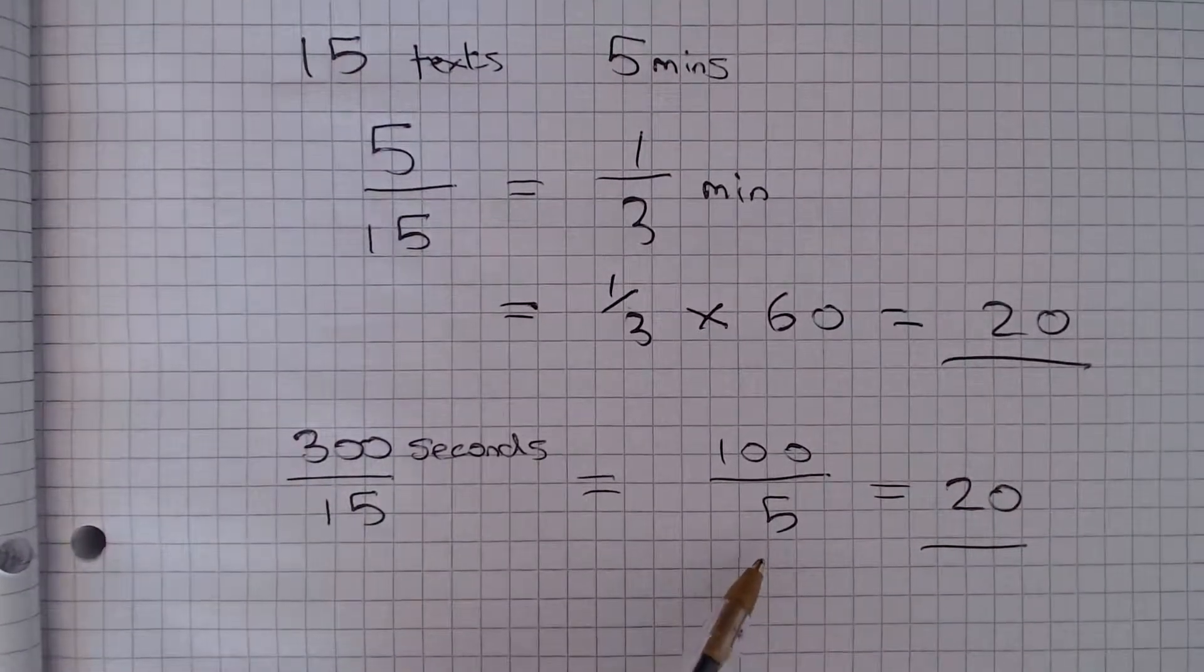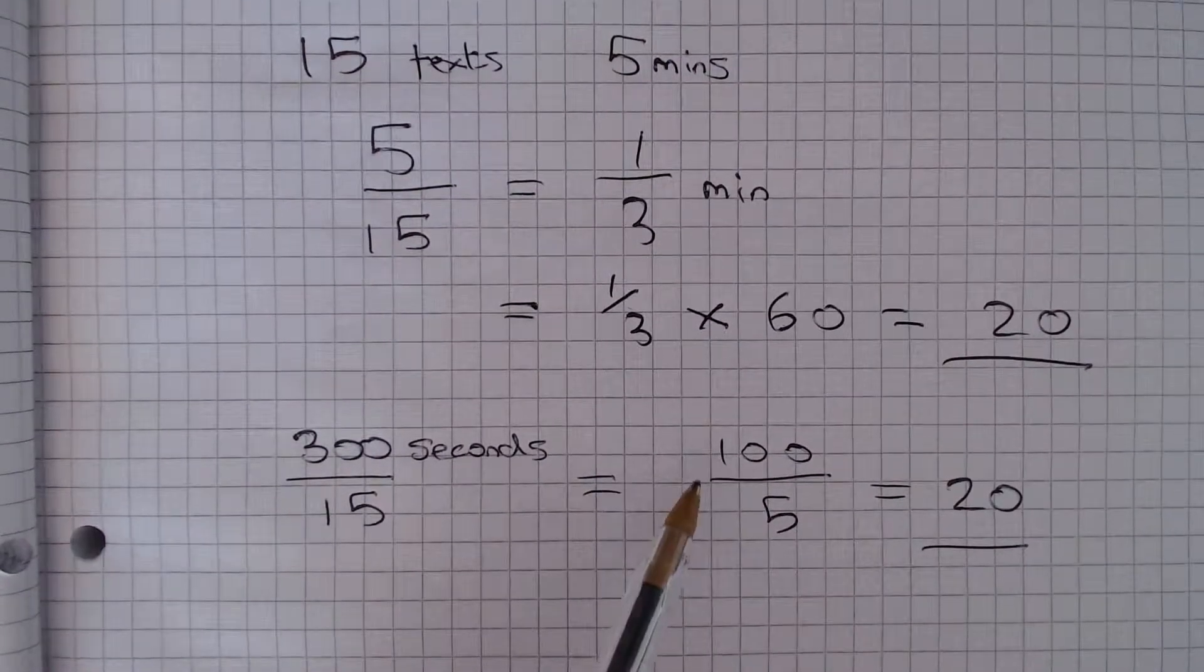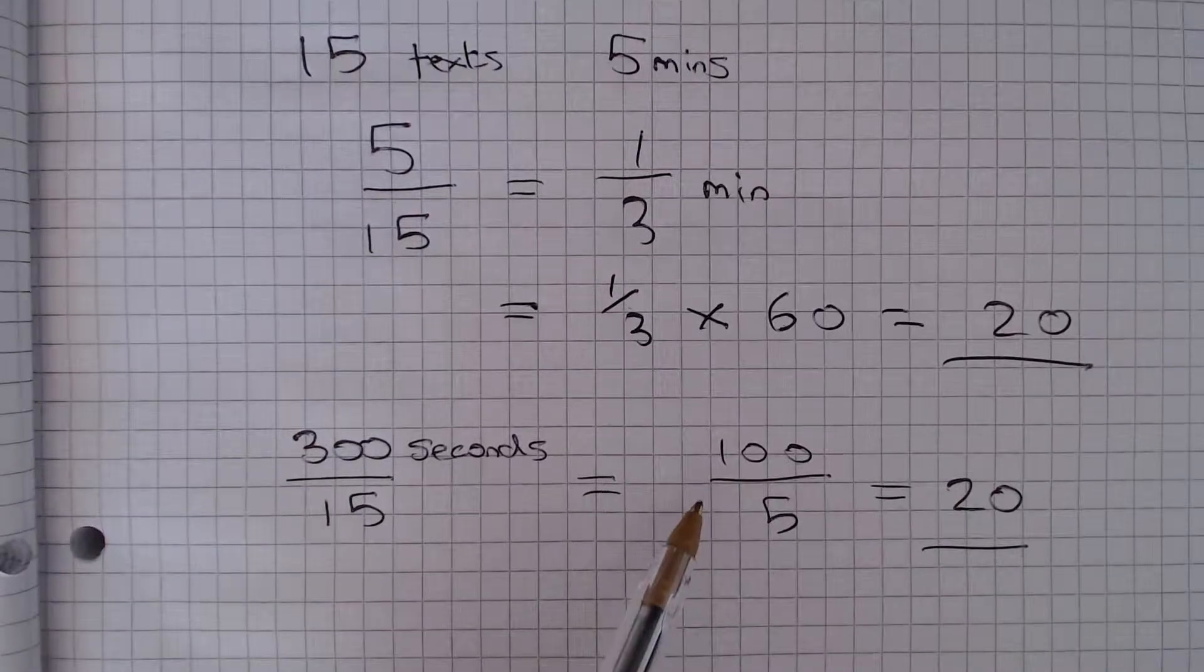Remember if we divide something by 5, we multiply it by 2 and divide it by 10. So 100 multiplied by 2 is 200 divided by 10 is 20.